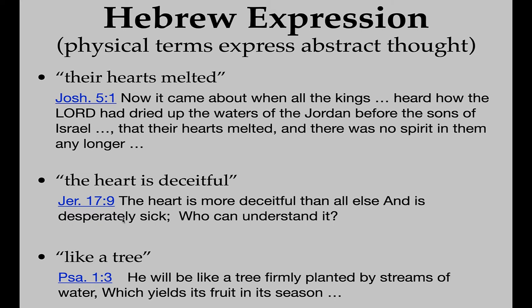Then in Psalm 1:3, talking about someone who walks according to the Lord: 'He will be like a tree firmly planted by streams of water, which yields its fruit in its season.' He has a physical picture of a tree — not just any tree, but one with roots, firmly planted, nearby streams of water for life and growth, and one that also yields fruit. He's not talking about agriculture; he's using physical imagery to describe the inward attitude and direction of a man who follows the Lord.